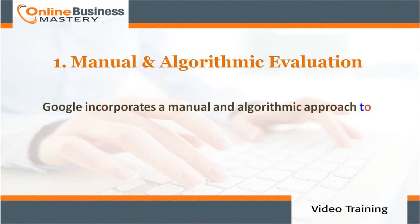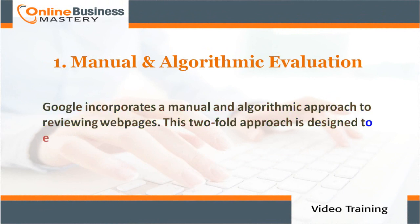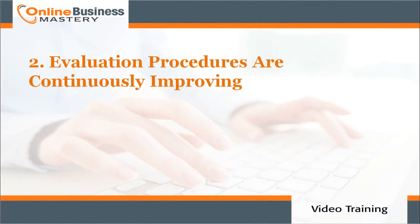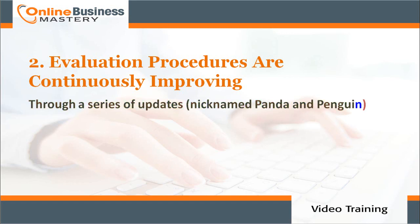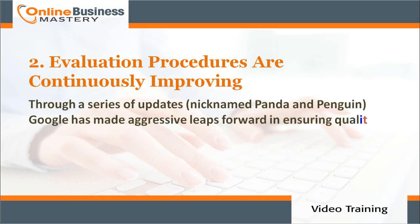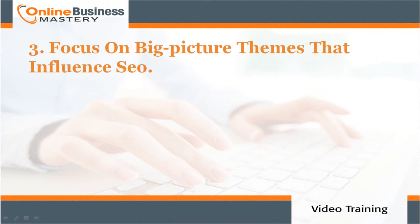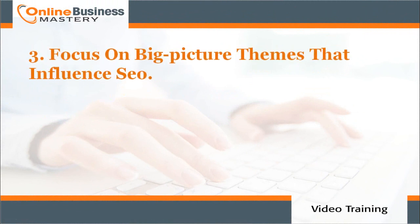Number one: manual and algorithmic evaluation. Google incorporates a manual and algorithmic approach to reviewing web pages. This twofold approach is designed to ensure that quality always triumphs. Number two: evaluation procedures are continuously improving. Through a series of updates nicknamed Panda and Penguin, Google has made aggressive leaps forward in ensuring quality.